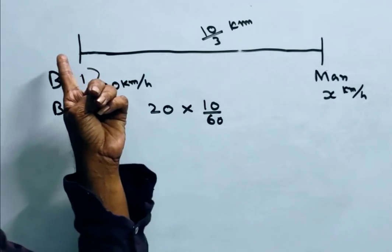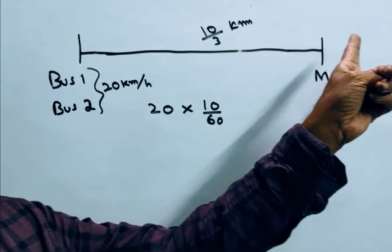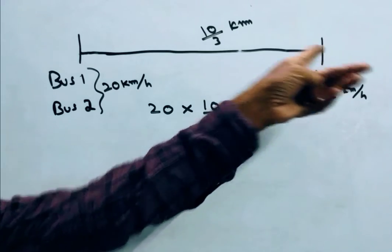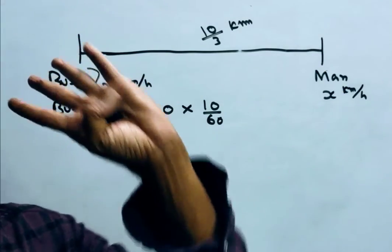Now the second bus started. At the same time, the man also started in the opposite direction of the bus with a speed of x kmph.